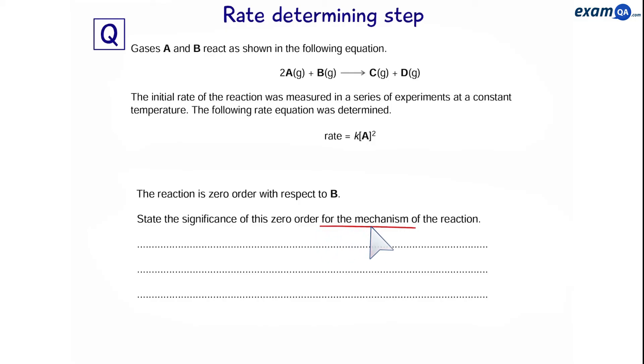So, it's not telling us to explain what zero order means in terms of rate. It's saying what does it mean in terms of mechanism. So, if something is zero order, it means it does not appear in the rate equation. And therefore, it does not appear in the rate determining step.